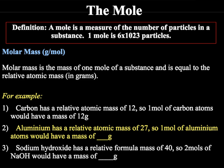This means we can work out the molar mass. The molar mass is the mass of one mole of a substance and is equal to the relative atomic mass. For example, carbon has a relative atomic mass of 12, so one mole of carbon atoms would have a mass of 12 grams. Likewise, aluminium has a relative atomic mass of 27, so one mole would have a mass of 27 grams.